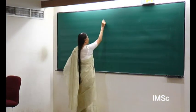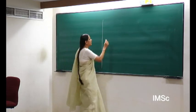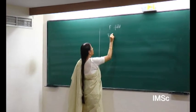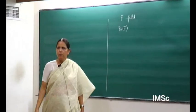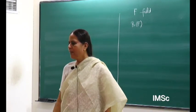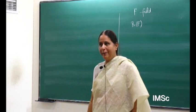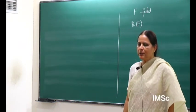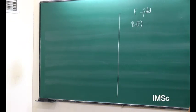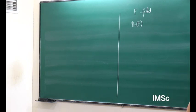Most of my talk concerns the Brauer group of a field F. This denotes the Brauer group of the field — it is a group invariant associated to the field. It was introduced by Brauer, of course, who introduced it to study the structure of finite dimensional division algebras over a field. However, it has become a very important object of study both from the viewpoint of algebraic geometry as well as number theory.